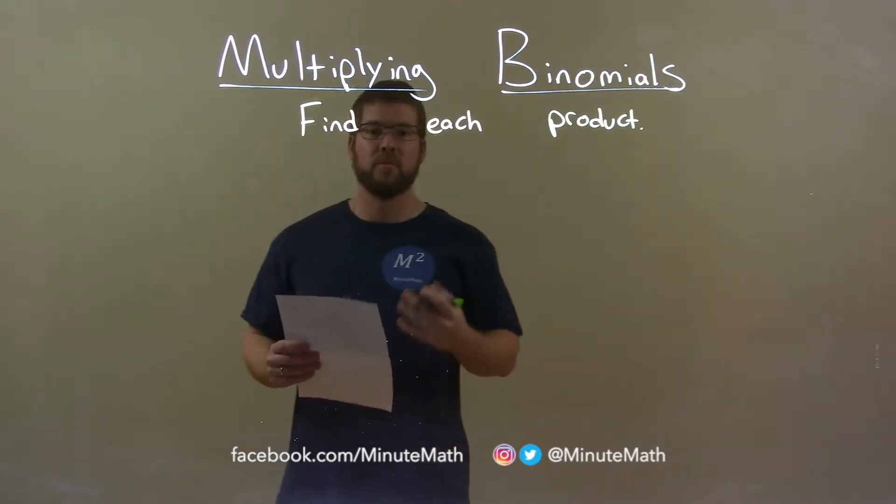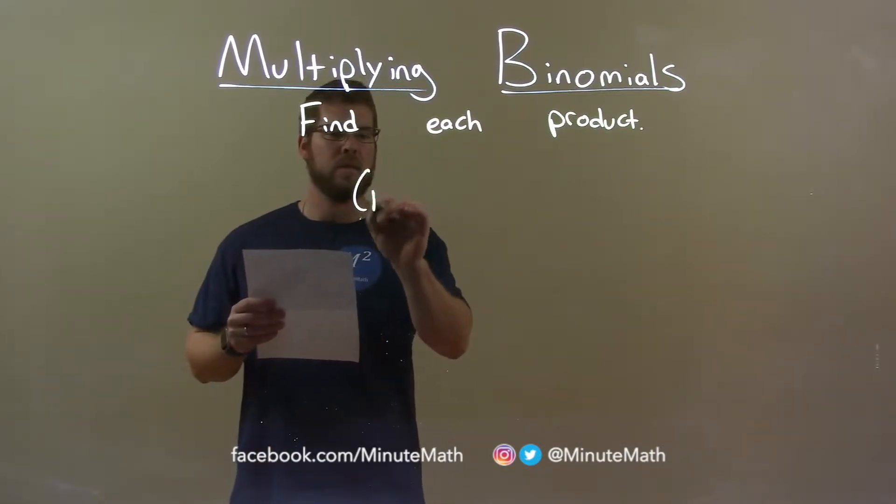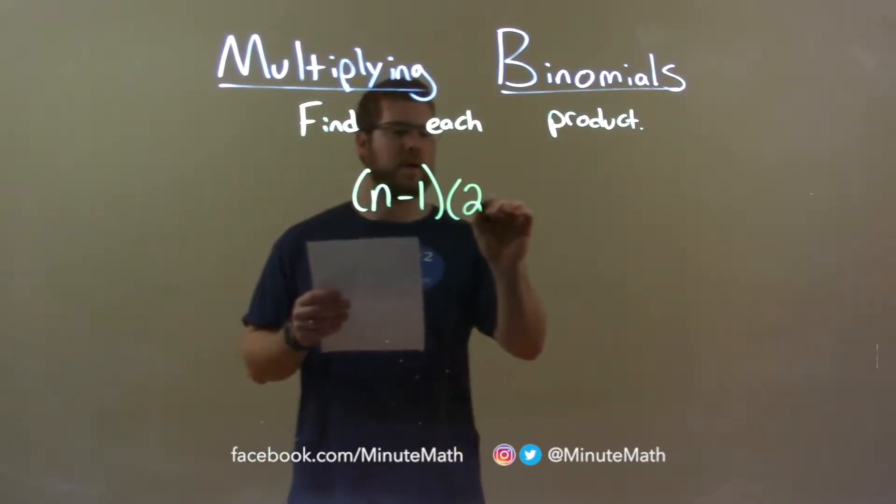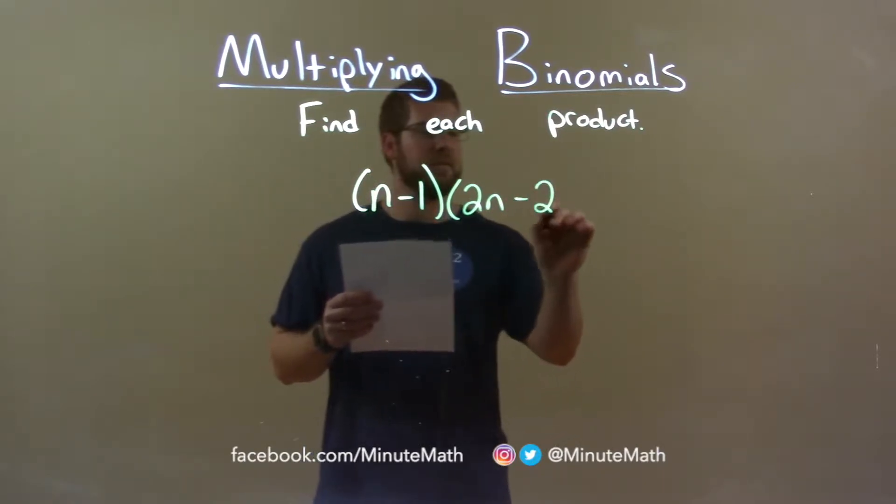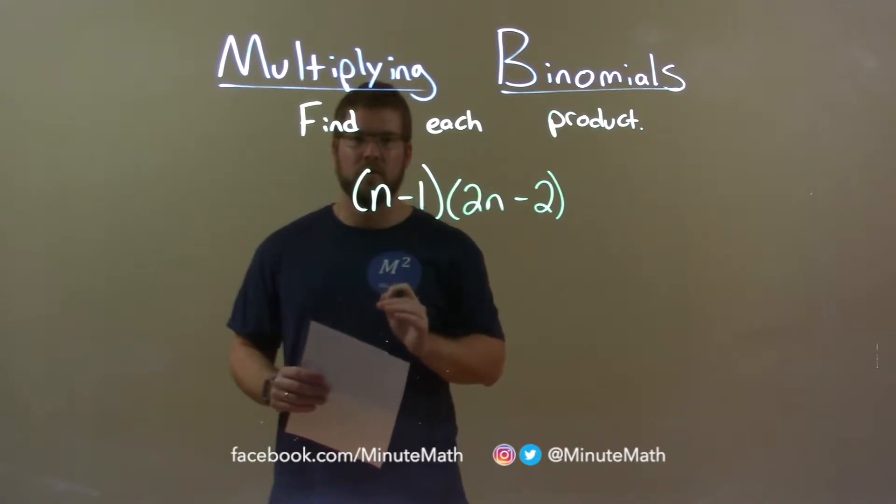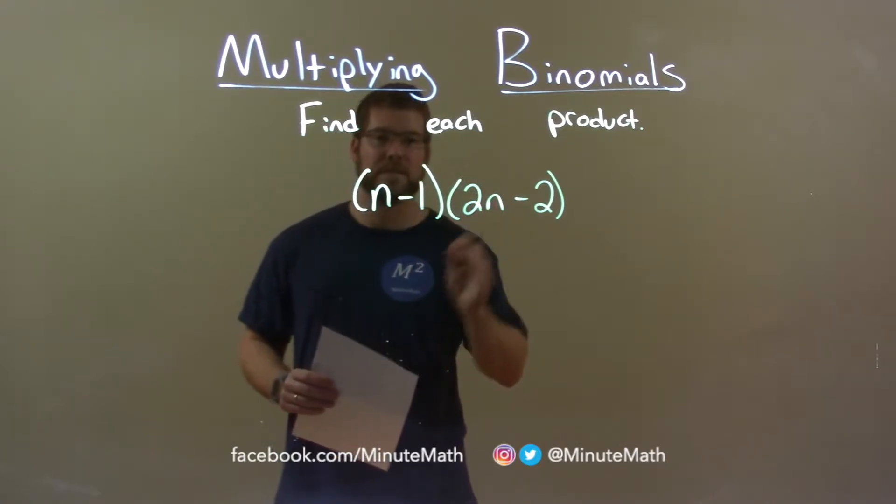So if I was given this product, n minus 1 times 2n minus 2, we want to take all parts of our first parenthesis and multiply it by all parts of our second parenthesis.